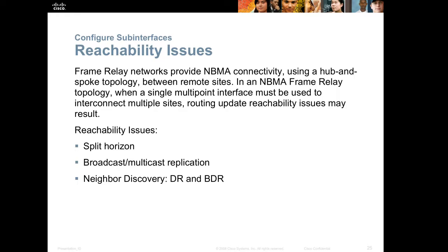Another reachability issue is split horizon. Split horizon is a routing protocol rule that when information is learned on one link, it cannot be shared back out the same link. Frame Relay uses multiple logical circuits traveling over the same physical link, so a routing protocol could interpret that one physical link — when it receives routing information on one logical circuit, it may not send it back out that same link to routers on separate logical circuits. We can either disable the split horizon rule, which is a bad idea, or we use sub-interfaces so that each circuit sits in its own logical container.